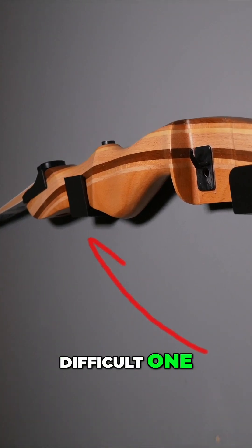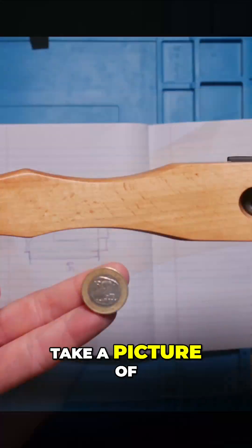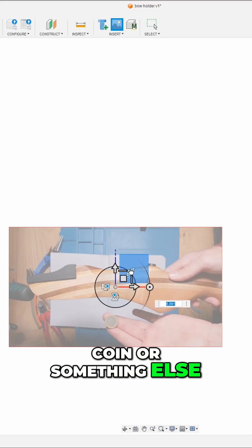Now for the more difficult one, make a mount for the curved part. Take a picture of the item with a coin or something else where you know the dimensions of.